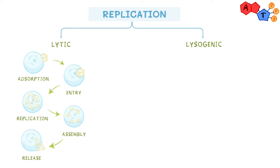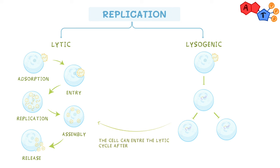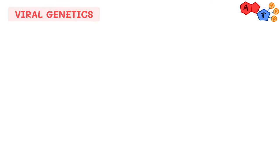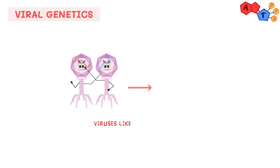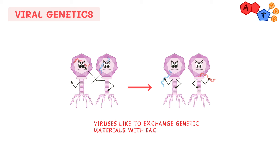In the lysogenic cycle — known as the sneaky cycle — the viral genetic material becomes part of the host cell's genetic material and stays hidden within it. Then, when the host makes new cells, it replicates its own genetic material containing the viral genetic material within it. This may seem harmless, but if the virus is triggered to go into the lytic cycle, then all those cells that replicated the viral genetic material would activate to form viruses. It is important for exam purposes to understand that, just like bacteria, viruses can exchange genetic material between each other.